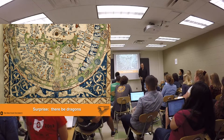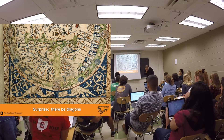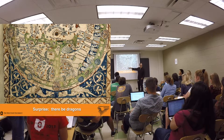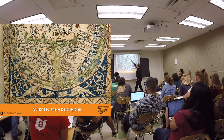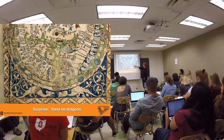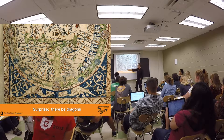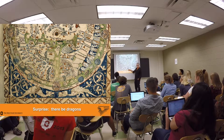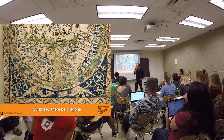Let's start with a map. This is a 12th to 13th century map of the known world — drawn as a circle. And outside the known world, here be dragons, in Latin. Here be dragons. So that's our metaphor that we're going to utilize.